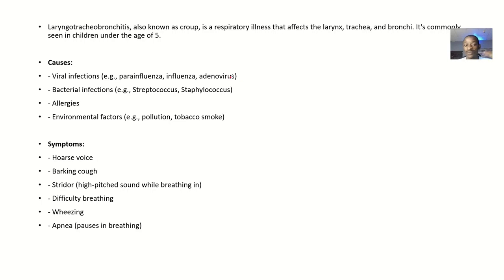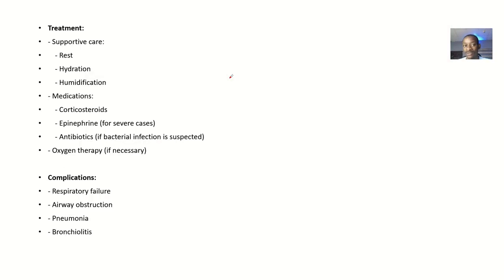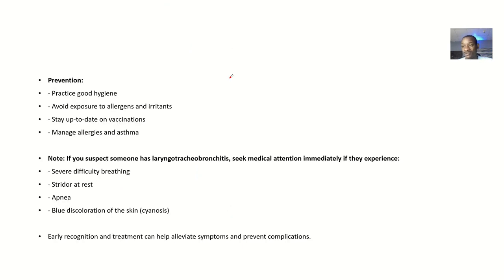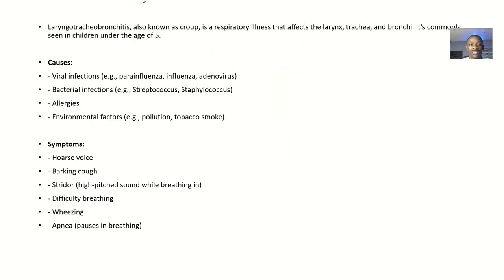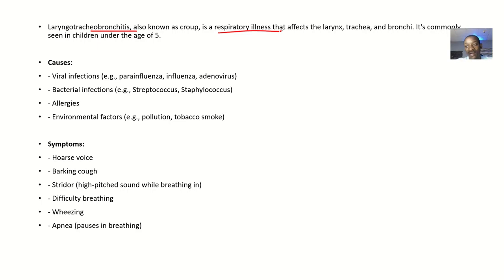We'll talk about the definition, causes, symptoms, treatments, complications, and preventions. Laryngotracheobronchitis is also known as croup. It is a respiratory illness that affects the larynx, the trachea, and the bronchi, and is commonly seen in children under the age of five.